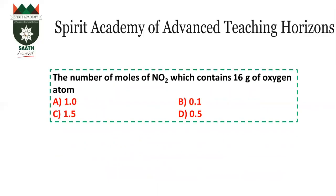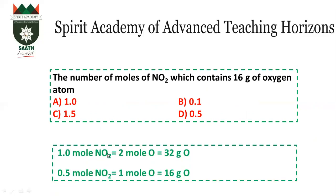Dear students: how many moles of NO₂ contain 16 grams of oxygen? If 1 mole of NO₂ has 2 oxygen atoms — that's 2 moles of oxygen, or 32 grams. But we need only 16 grams, which is half of 32. So the moles of NO₂ would also be halved, giving 0.5 moles. The answer is D.